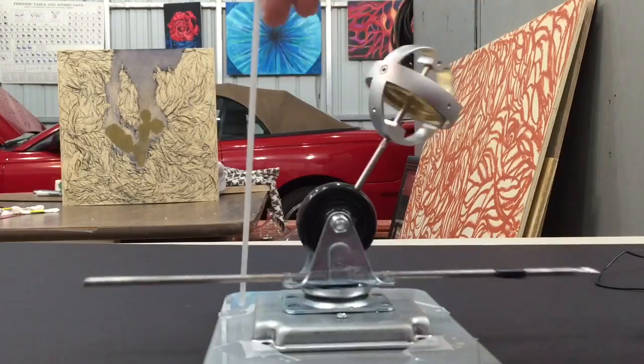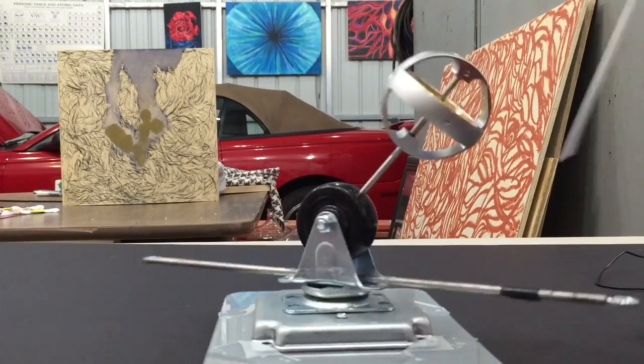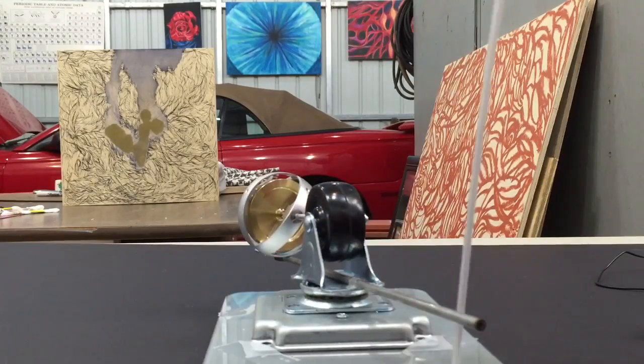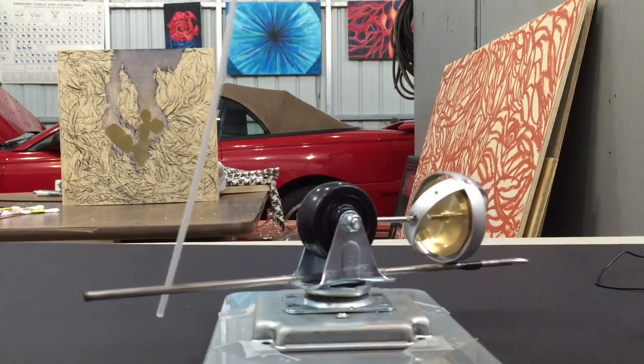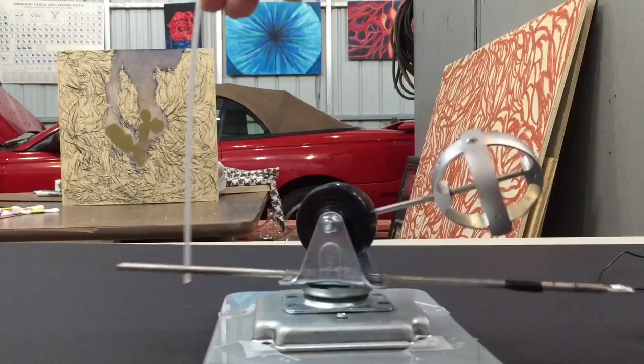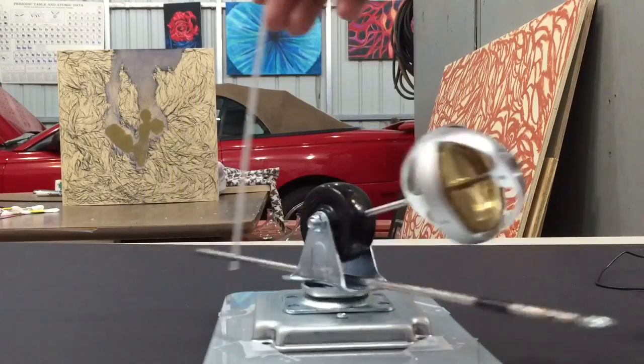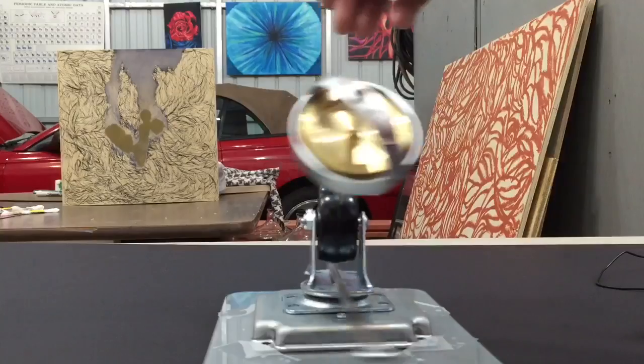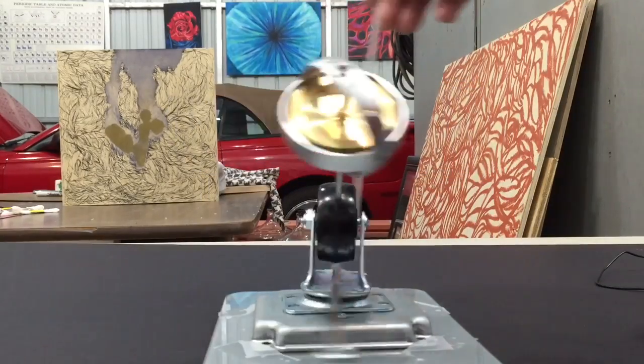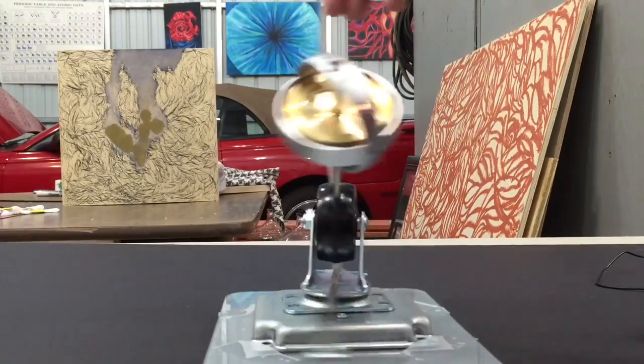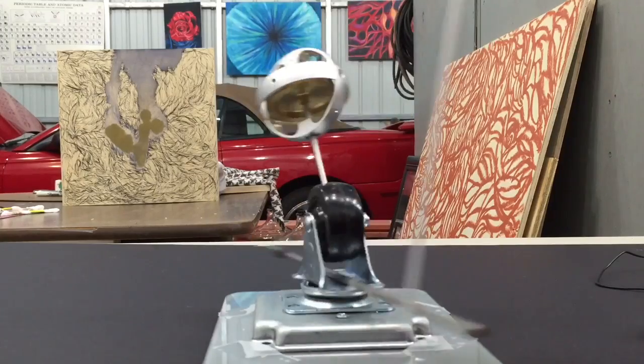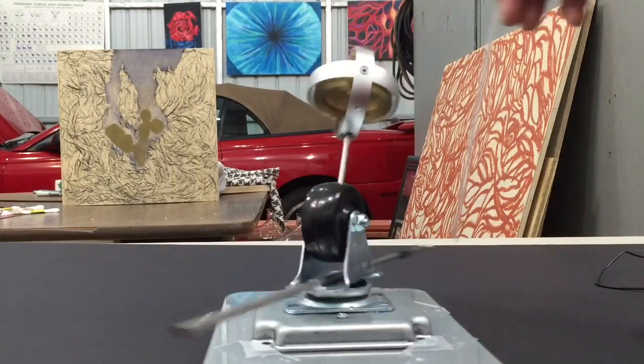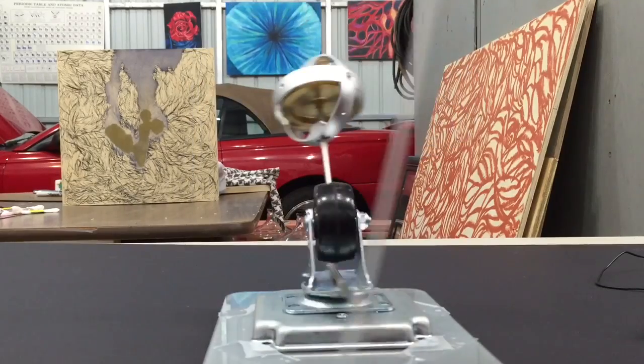He had done one where they had a 40 pound rotor on a shaft spinning at high speed and he showed how hard it was to pick up over his head if it wasn't spinning. But if he spins it up to high speed and then lets it follow a path of precession as he picks it up over his head, it was easy to pick up.